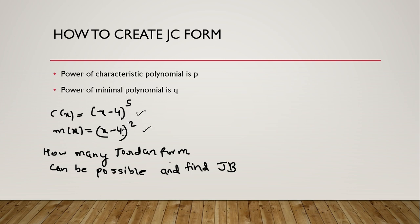If the question asks how many Jordan forms are possible and you have to find the Jordan blocks, remember: whatever is given in the characteristic polynomial, the power of it is considered as p, and in the minimal polynomial the power is considered as q.